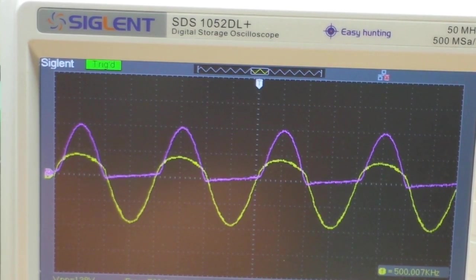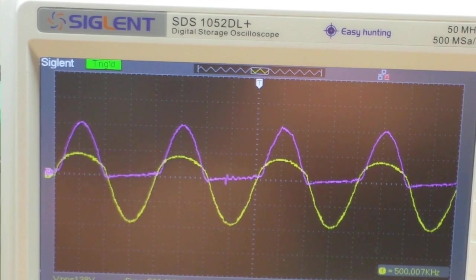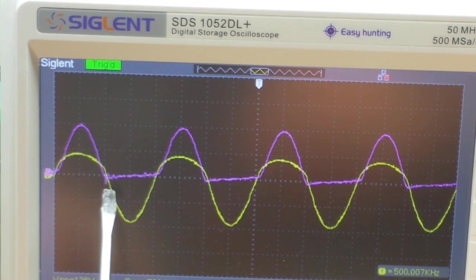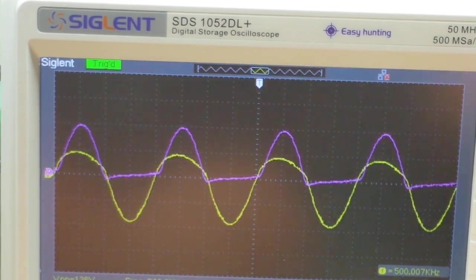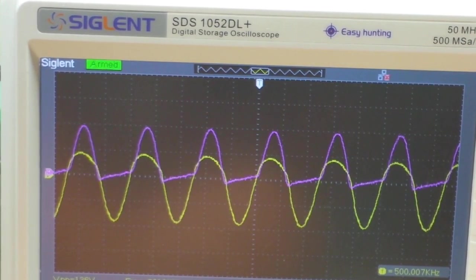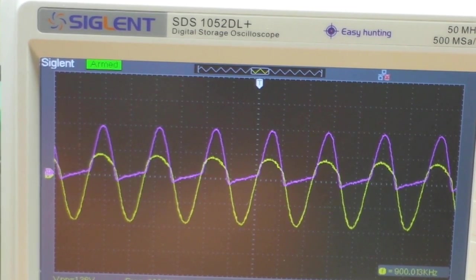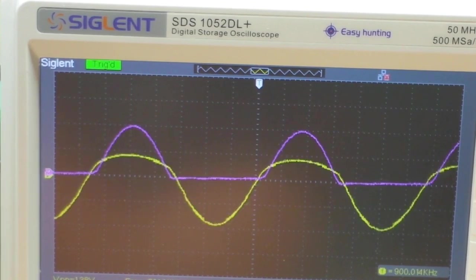Okay, so now at 500k, we're starting to see a little bit of a drip below zero at the beginning of the blocking portion of the wave. And if we take it up, there's 900. And at 900, we're obviously below the zero point. So I'm going to take this back down.